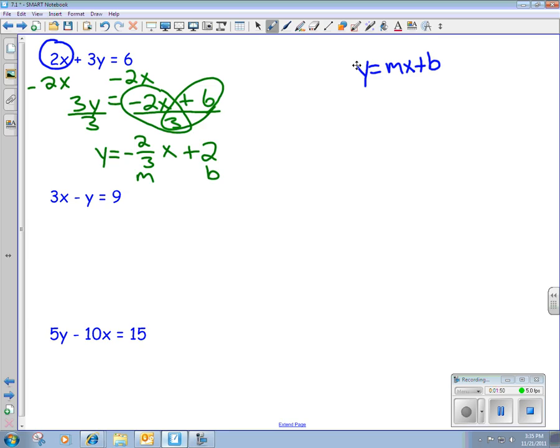In our second one, 3x minus y equals 9. So to get that y by itself, we're going to get rid of the x again. So we're going to subtract 3x on both sides. So we have negative y equals, notice I brought the negative down with it, minus 3x plus 9. Now remember, you can't do 9 minus 3x to get a 6. Because of the fact that 9 doesn't have an x, the 3 does have an x, those aren't considered like terms. You can't add or subtract them.